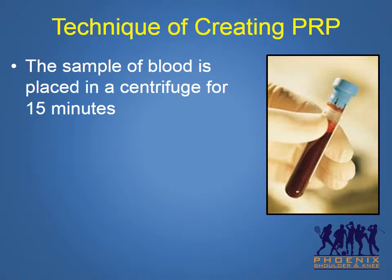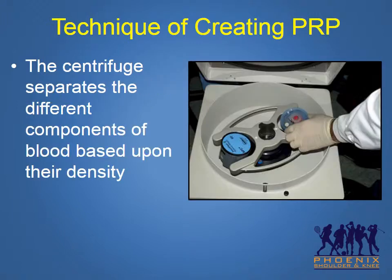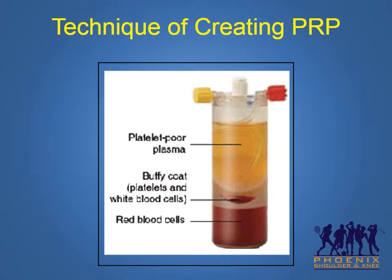The sample of blood, shown in the image on the right, is then placed in a centrifuge machine for approximately 15 minutes. The centrifuge spins in circles at high speeds. During this process, the different components of blood separate into different layers based upon their density. As shown in the image on this slide, the centrifuge creates a vial which contains three distinct layers of fluid. The top layer is mostly water and plasma and has very few platelets in it. This is called the platelet poor layer.